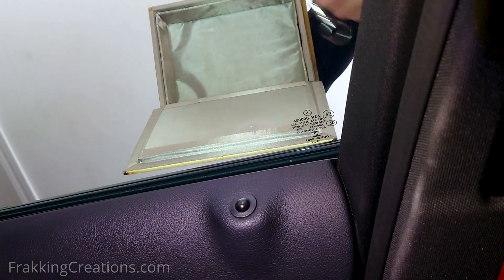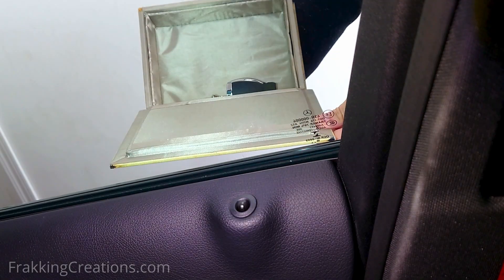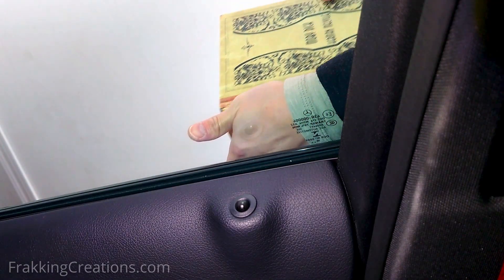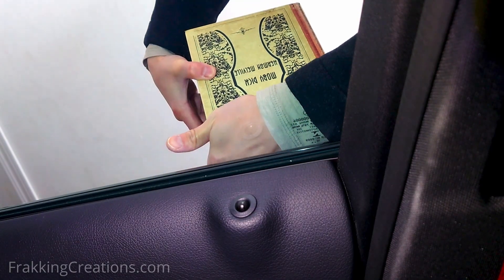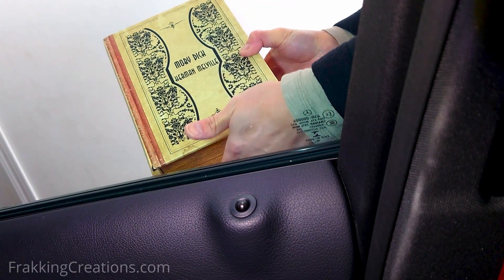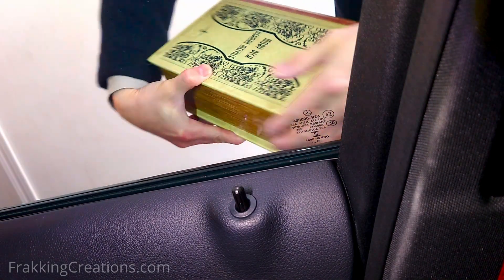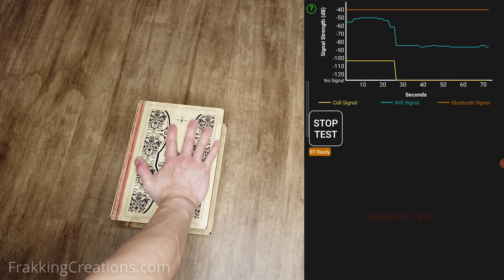I will also test the box out using the key fob. You need to properly test your box out because it is very easy for a small opening to leak enough signal that can be picked up and defeat the purpose of the box. I had to make modifications to the original design after testing revealed that the box was still leaking some RF signals. Find out how I solved the problem later in this video.